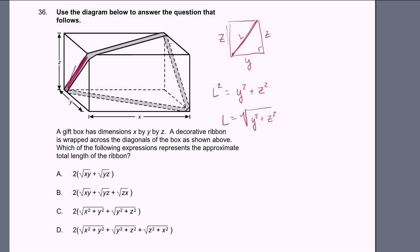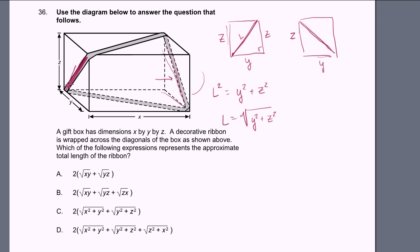We can use that exact same argument on this side of the box. If you were to look at it from the inside of the box, it would look like this — the height is z, the base is y, and so we just have the hypotenuse. y squared plus z squared equals the length squared, or the length equals the square root of y squared plus z squared. So that's this length and that length. If we add just those two lengths, we're going to have 2 times the square root of y squared plus z squared. That's the two red parts of the ribbon.